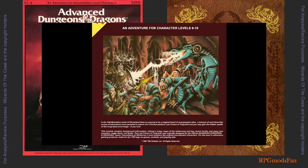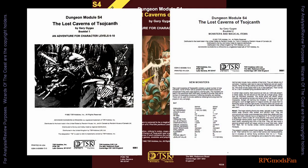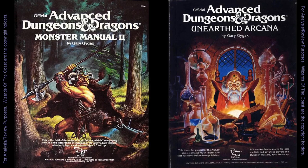The S4 module includes two booklets. One is actually the module text, while the other contains new spells, monsters, magic items, and artifacts. This video will focus on the adventure part of the module. Practically all the material in Booklet No. 2 were later included in the AD&D Monster Manual 2 and the Unearthed Arcana books.